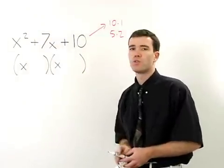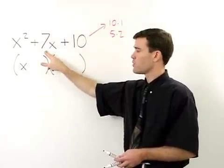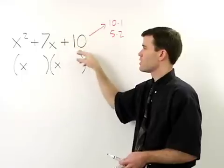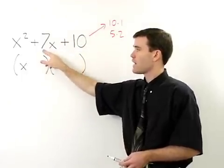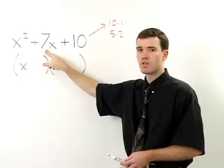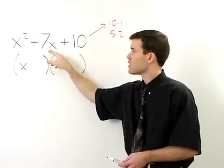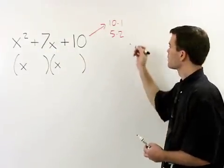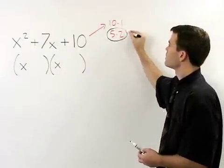Take a look at the middle term in the original polynomial. The rule is the factors of the last term that you use have to add to the middle term in the original trinomial. So which pair of factors adds to 7? 5 and 2.